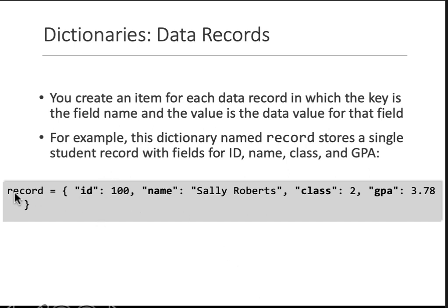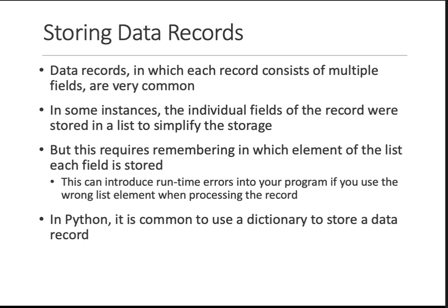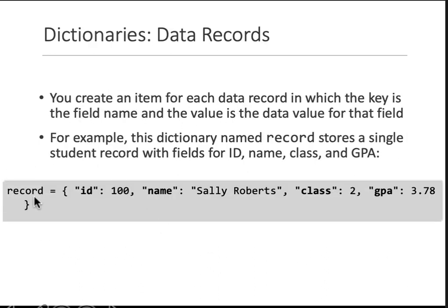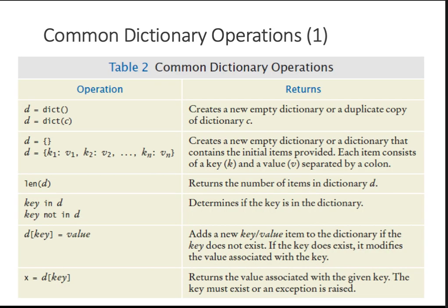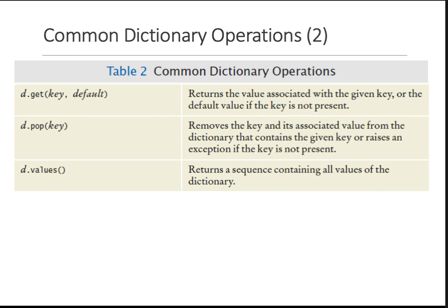For data records, you can create a dictionary called 'record' to store a data record. You can create one item per student: record one for the first student, record two for the second, and so on. In each record you can store everything regarding a given student — for example, key 'ID' with value 100, key 'name' with value 'Sally Roberts', and so on. You can then use the record and the key name to get all related information for that record. These slides give you information on everything discussed — make sure you read them. And that is all about dictionaries.